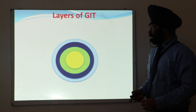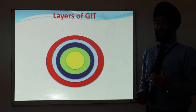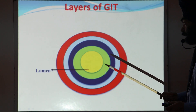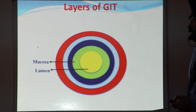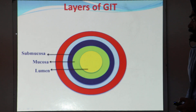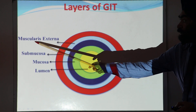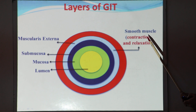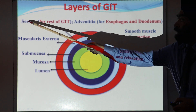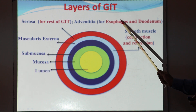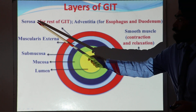If we discuss the different layers of the GIT, we can see there are four layers. This is the lumen. The first layer is called the mucosa, which is very adjacent to the lumen. Then we have the submucosa, then the muscularis layer — muscularis externa — which is mainly made up of smooth muscles responsible for contraction and relaxation of the GIT. The outermost layer is called serosa or adventitia; adventitia is used for the esophagus or duodenum, but for other parts of the GIT we use the word serosa.